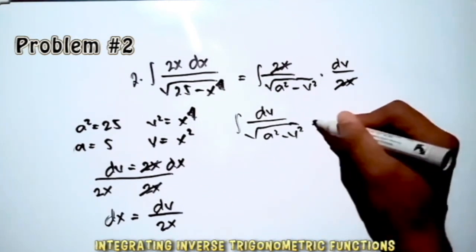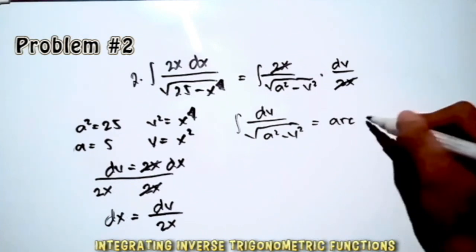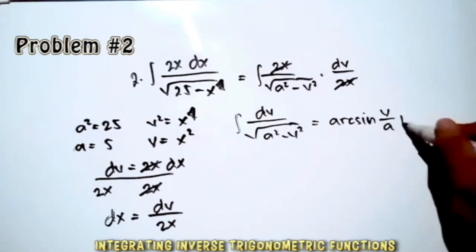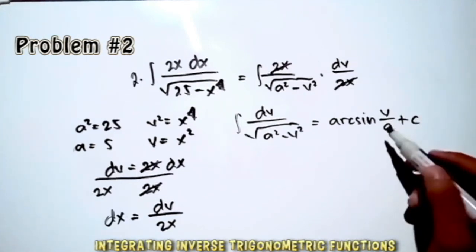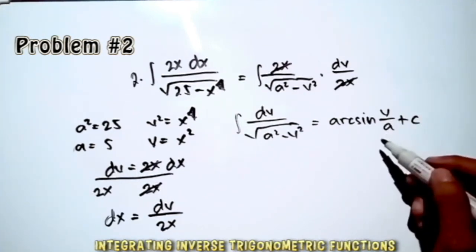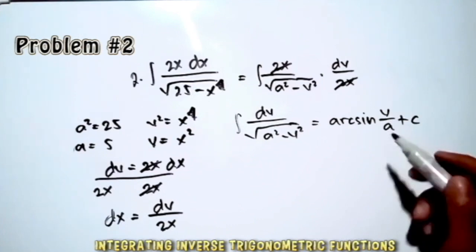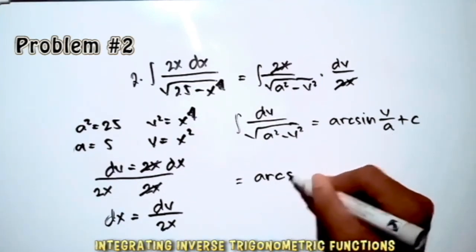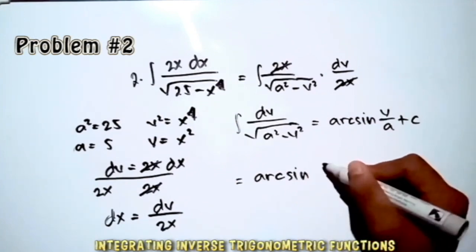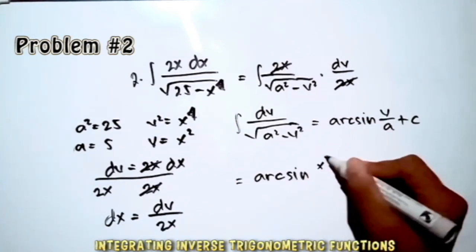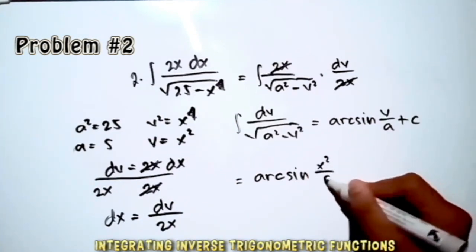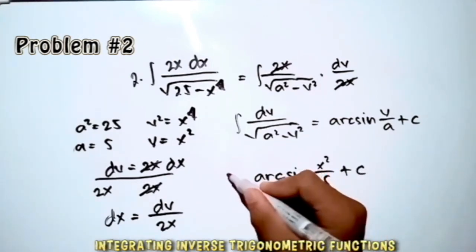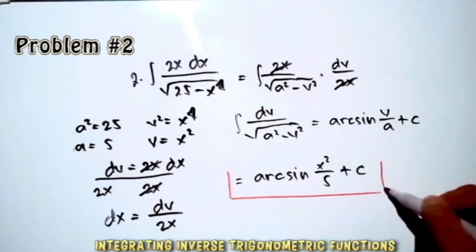Therefore this equals arcsin(v/a) + C. Since v = x² and a = 5, our final answer is arcsin(x²/5) + C.